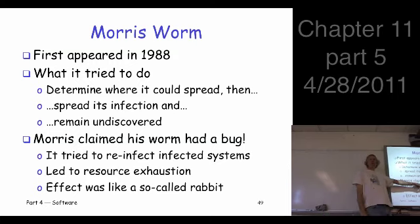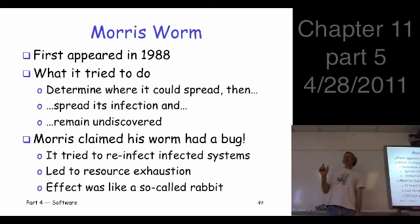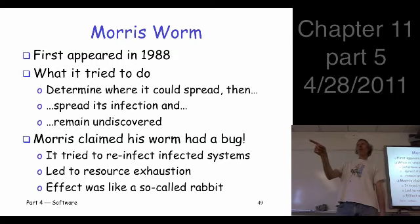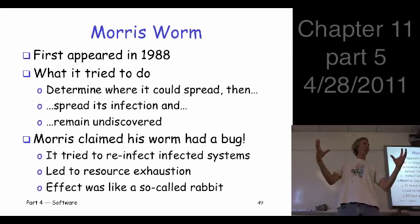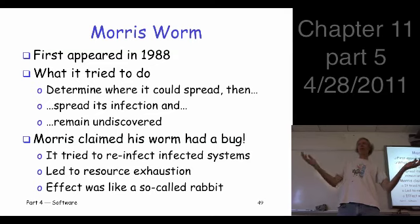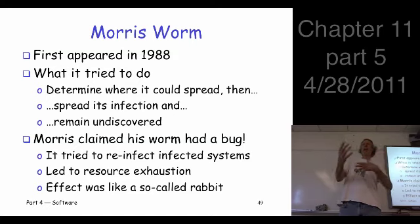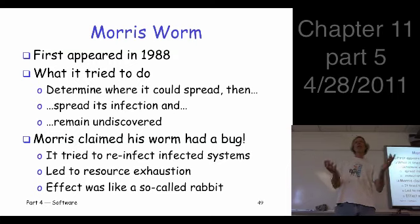Morris claimed his worm had a bug — it was supposed to look at systems and say, that one's already infected, so I'll leave it alone. That part didn't work. So it tried to reinfect systems that were already infected. As it grew and infected more and more systems, each of those was going out trying to infect more systems. The problem was that it used up bandwidth — it consumed all available bandwidth at some point and people couldn't use the network.